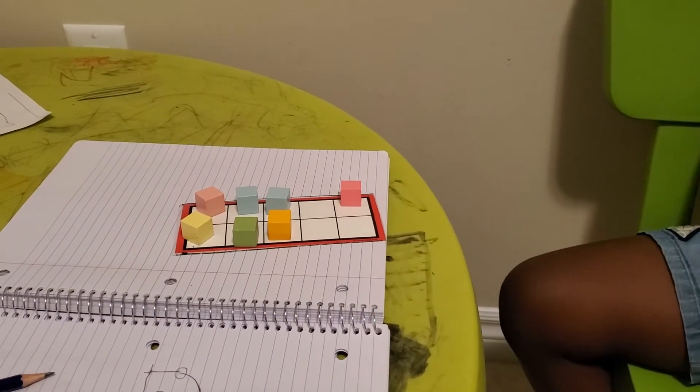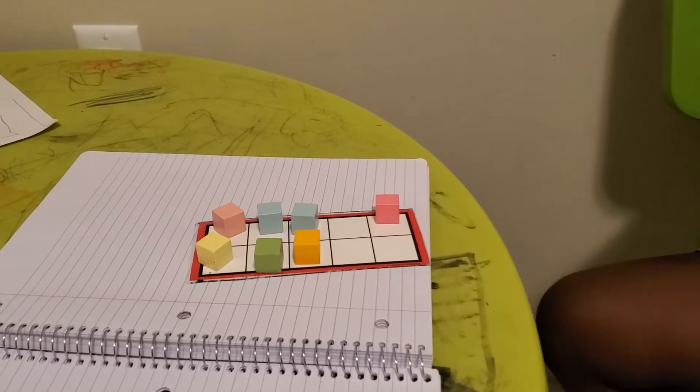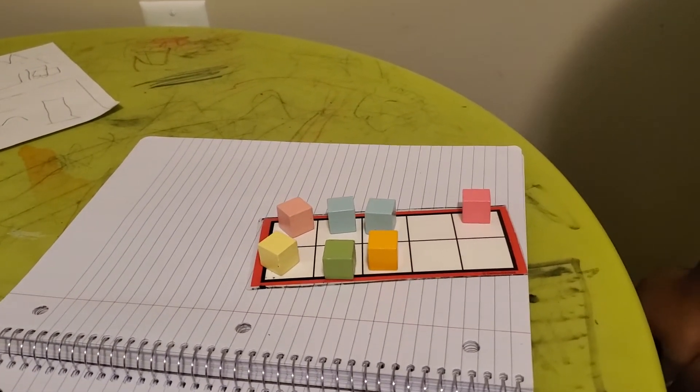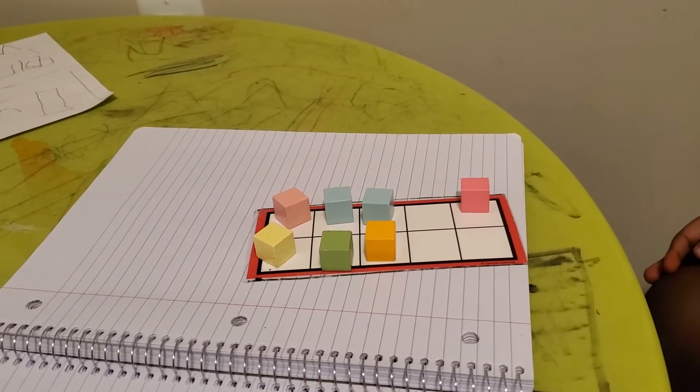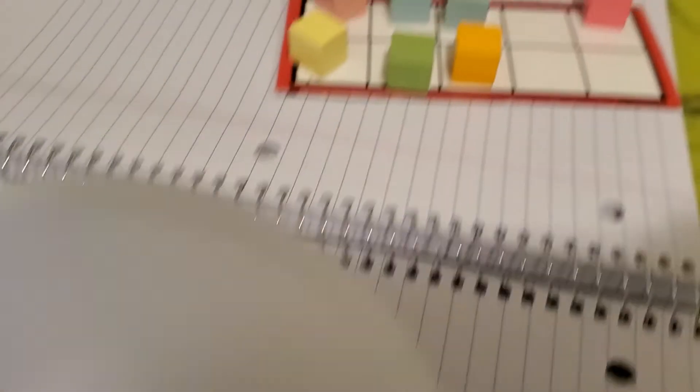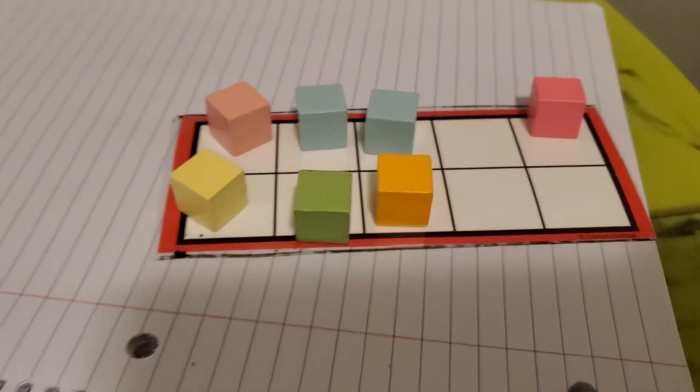You put away seven and there's three in the bin. I put away what? Seven and there's three in the bin. Okay. So, yes. There's three in the bin and there are seven on the cubes, right? Yeah.